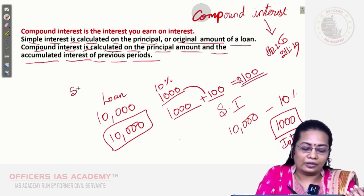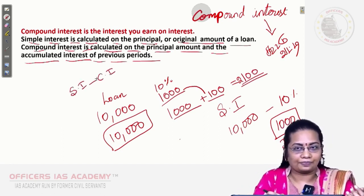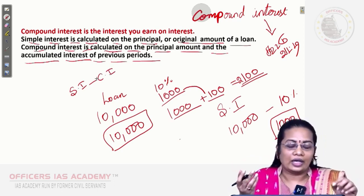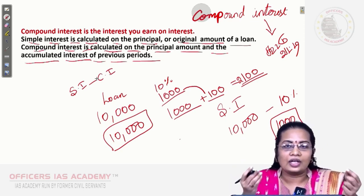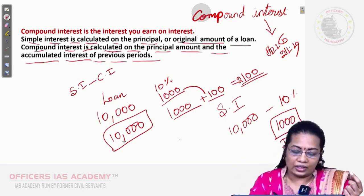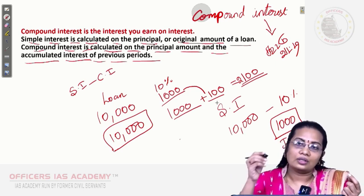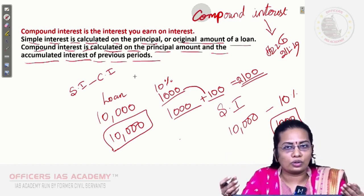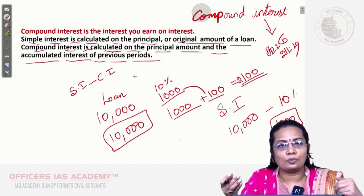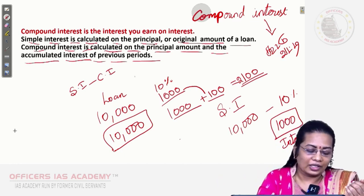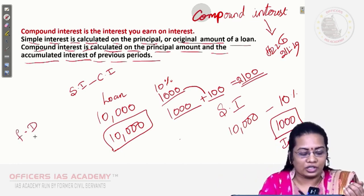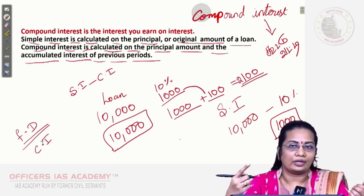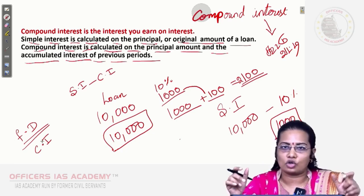The simple interest and compound interest difference is in case of simple interest they won't charge interest on interest. In case of compound interest they will definitely charge you the interest amount for the previous interest. In general, banks use compound interest, but in case of FDs, if you make fixed deposits you will be dealing with compound interest, so they will give you interest for interest.